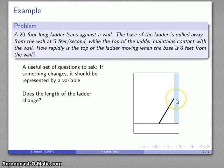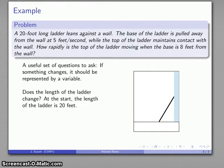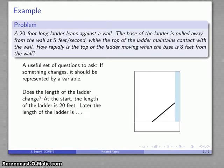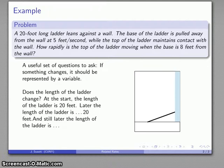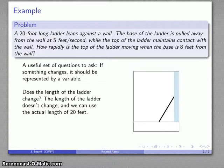How about the length of the ladder? So at the beginning, I have a ladder that's this long. And as I pull the base away from the wall, I have a ladder that is still the same length. And if I keep pulling it away from the wall, the length of that ladder is still 20 feet. And since the length of the ladder doesn't change, we can use the actual length of 20 feet.